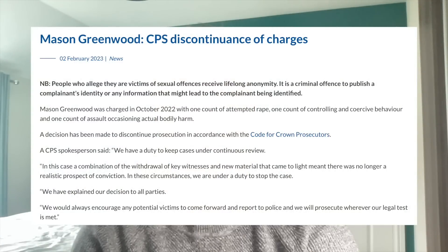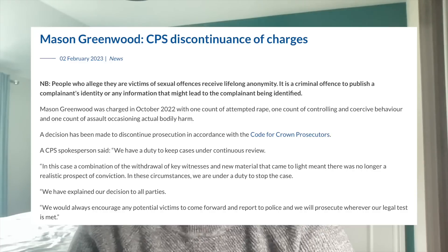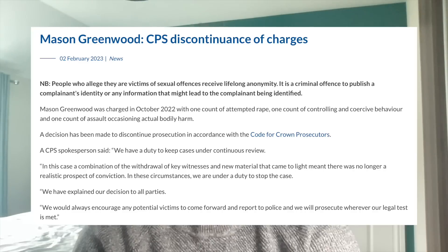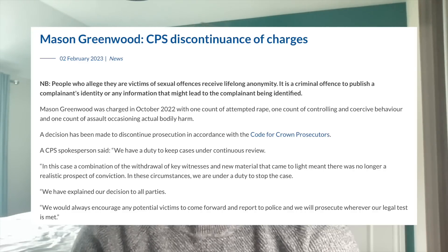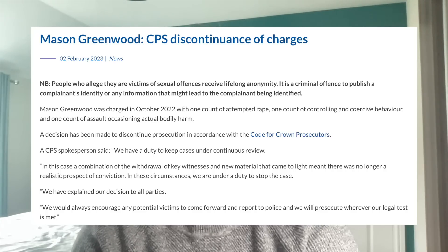What happened in the case of Mason Greenwood — based on the statement provided by the Crown Prosecution Service — is that there was a change of circumstances. They outlined that key witnesses had withdrawn from the case and that new evidence had come to light, which meant that the evidential stage of the Full Code Test was no longer satisfied. Simply put, it was no longer more likely than not that a jury, judge or magistrate, properly directed and acting in accordance with the law, would convict the defendant of the charges alleged. As that test is no longer satisfied, a prosecutor is under a duty to discontinue the case on that basis.